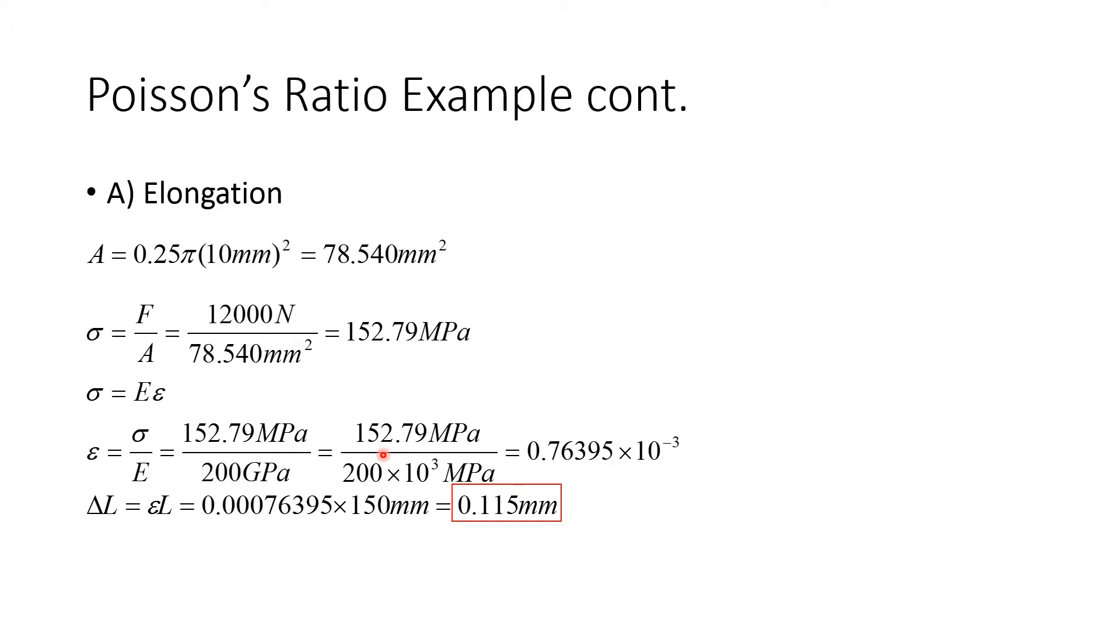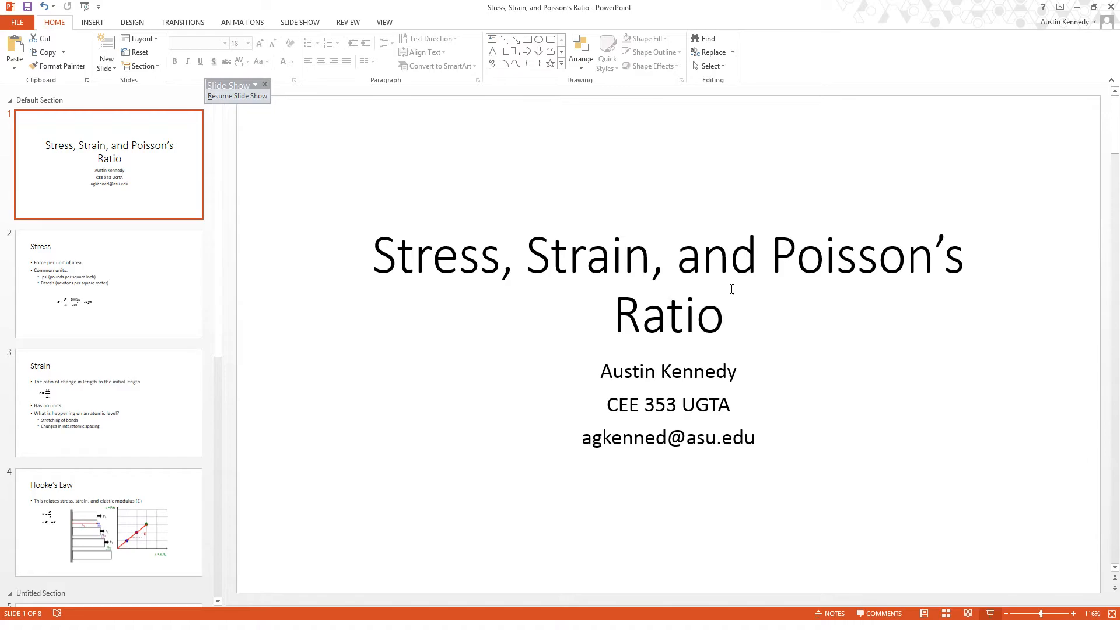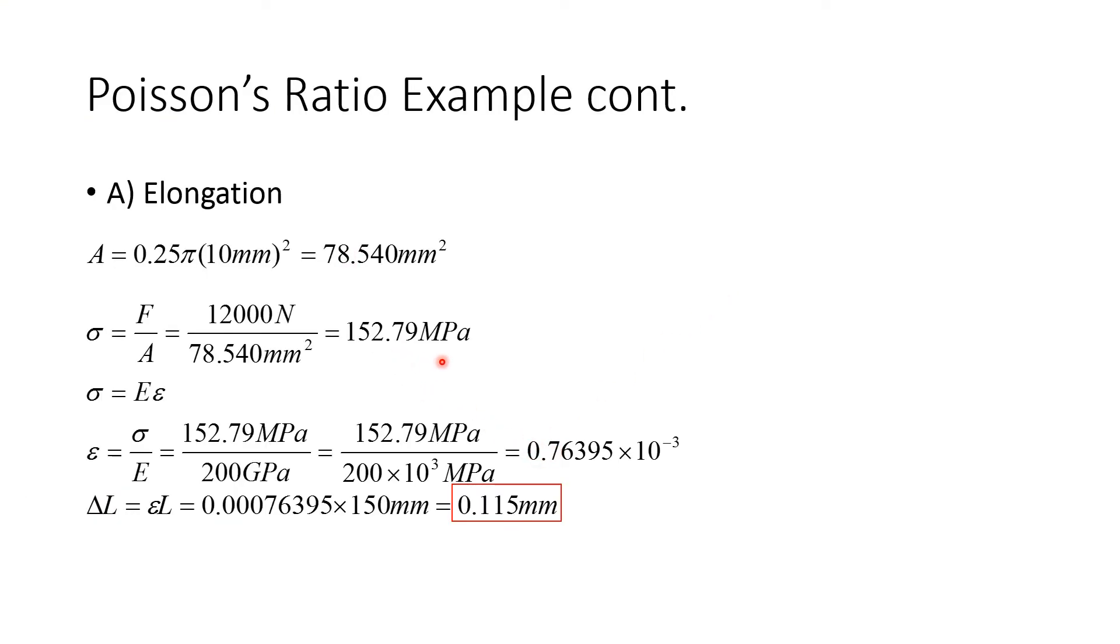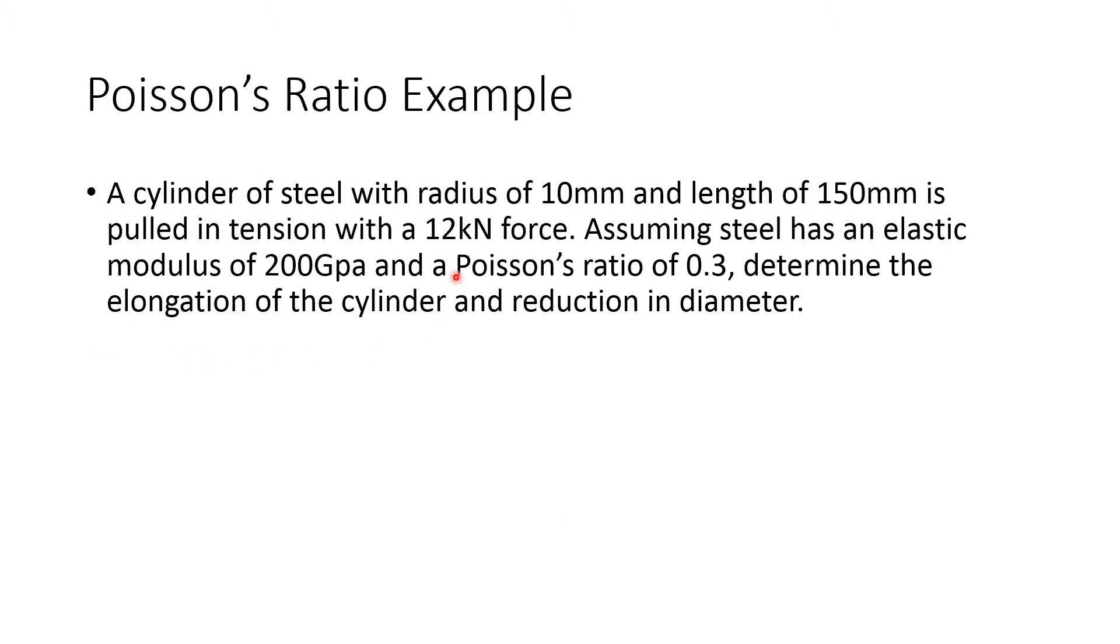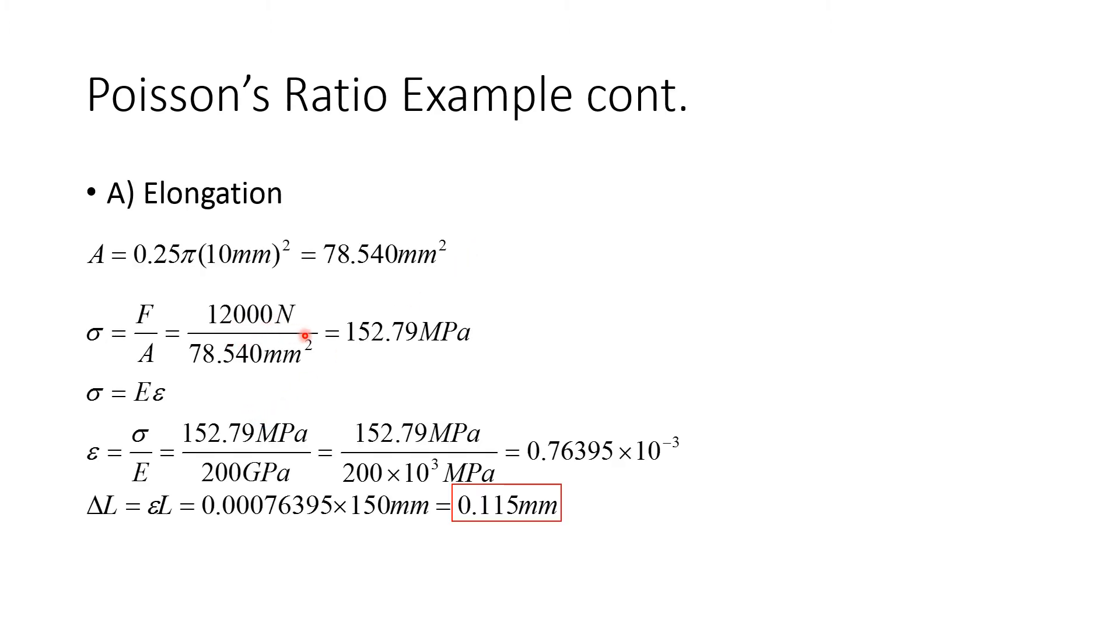So for the first part we're going to bring this into two parts. We want to find the elongation of the specimen. First we need to define the area so we can find the stress. This area is just 0.25 pi radius squared. Oh, apologies. 0.25 pi radius squared. And you can see that radius was 10 mm. So that gives us 78.540 mm squared. So the stress here is equal to the force divided by the area. We can see the force is 12 kN. I'm going to write this out fully as 12,000 N. And we're going to divide that by the area of 78.540 mm squared. And here we get 152.79 MPa.